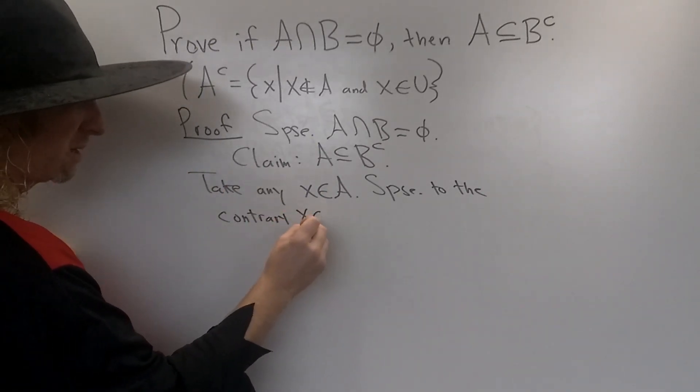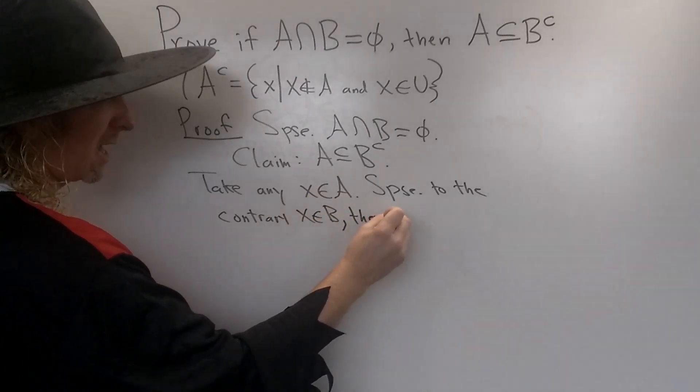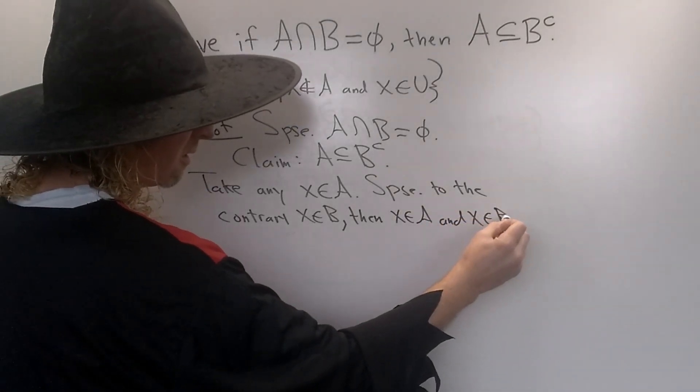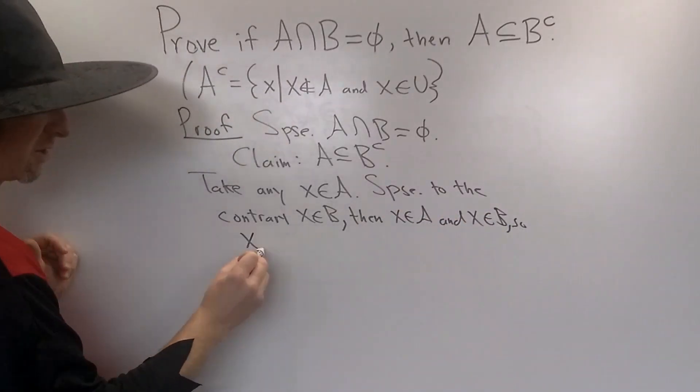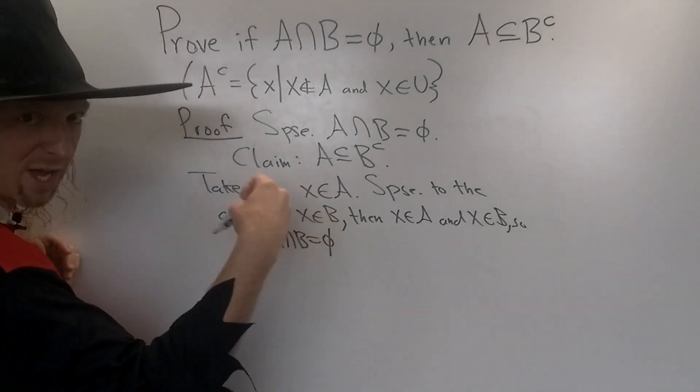Suppose to the contrary that x is in B, then that would mean that x is in A and B. x is in A and x is in B, just being extra verbose here. So that means that x is in the intersection, which is empty. So we have a contradiction.